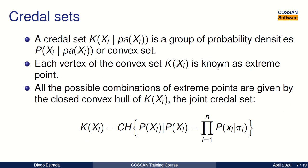The name Credal Network comes from the use of sets of probability densities called Credal sets. A Credal set is a closed convex set of a finite number of probability measures. Each vertex contained in that set is known as an extreme point. All the possible combinations of those extreme points are contained in the closed convex hull, which is known as the joint Credal set.